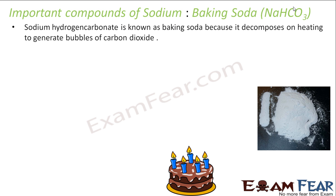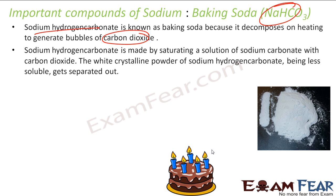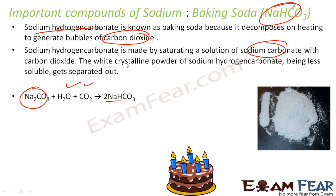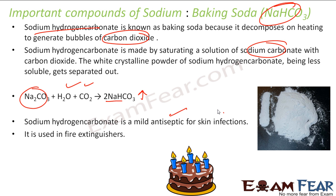Baking soda is sodium hydrogen carbonate (NaHCO3). When you heat it, it gives off carbon dioxide bubbles, and these bubbles create the sponginess in cakes and pastries. Sodium hydrogen carbonate is prepared by reacting Na2CO3 with water and carbon dioxide — since it is less soluble, it separates out. It is also a mild antiseptic used for skin infection, and it is used in fire extinguishers.